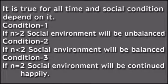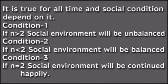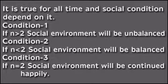This equation is true for all time, and social condition depends on its condition. If N is greater than two, the social environment will be unbalanced. If N is less than two, the social environment will also be unbalanced. If N equals two, the social environment will continue happily.